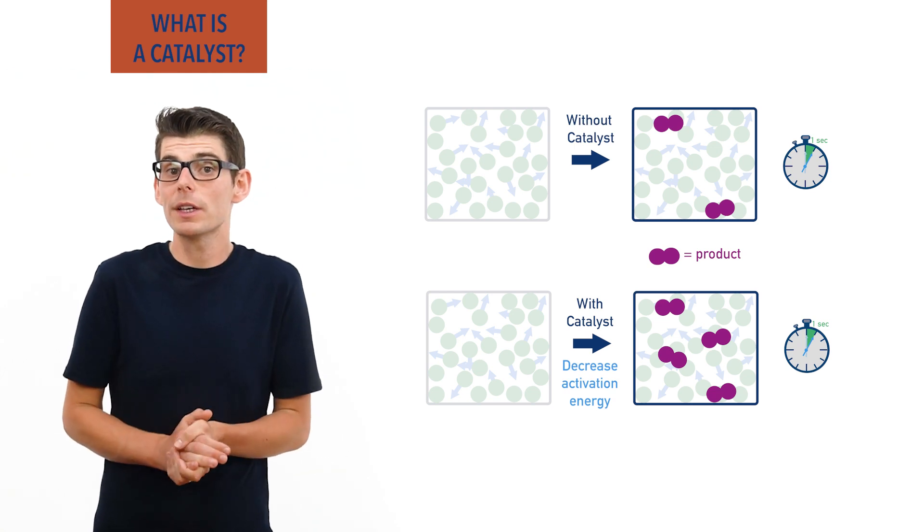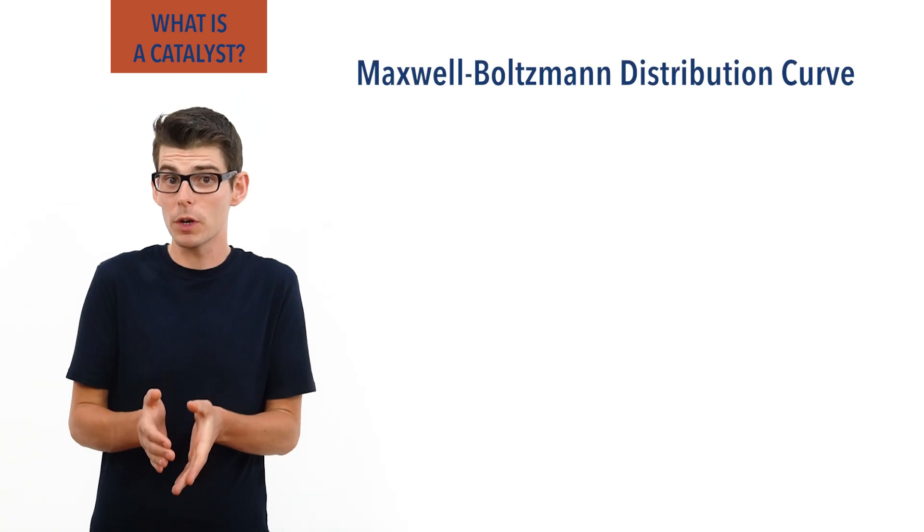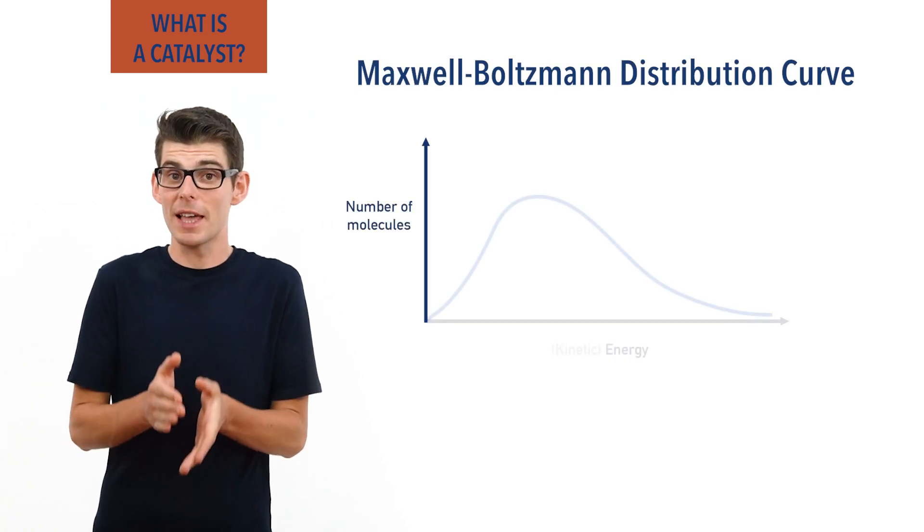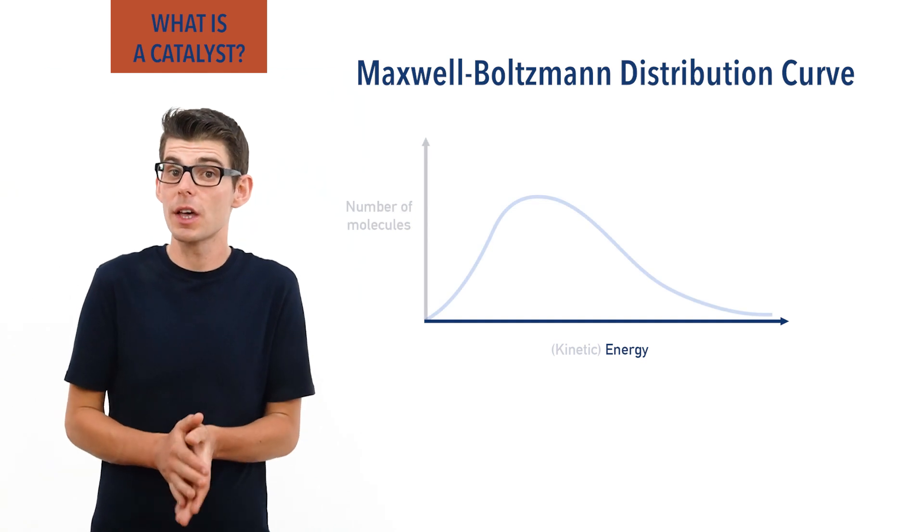We can see this by looking at Maxwell-Boltzmann distribution curves, with number of molecules on the y-axis versus energy of molecules on the x-axis.